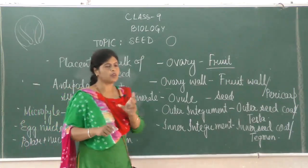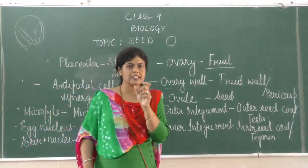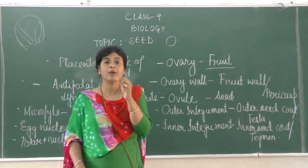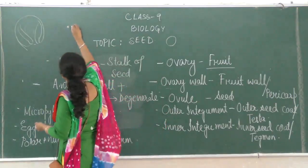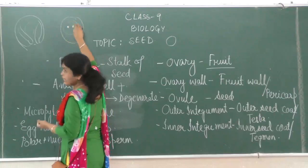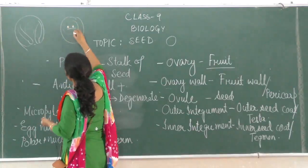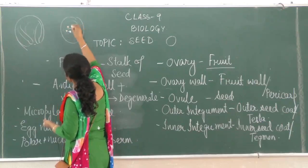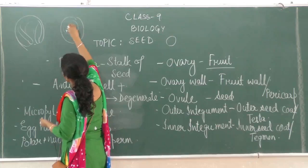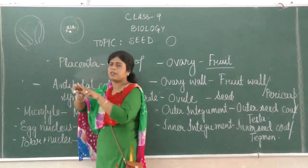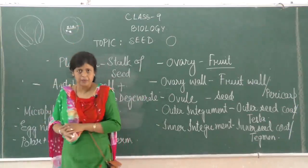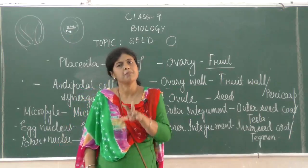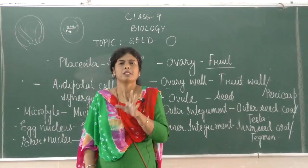The polar nuclei detail: the two polar nuclei are present in the central cell. Before getting fused with the male nucleus, the two polar nuclei fuse with each other to form the secondary nucleus. Finally, the two polar nuclei — via the secondary nucleus — form the endosperm, which is the food-storing part of the seed.